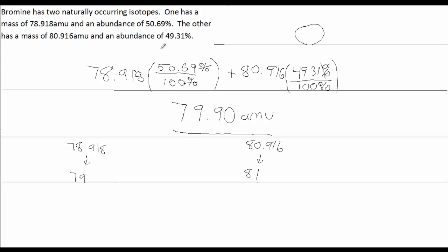Let's look at the percent abundances. This 78.918 has an abundance of, let's say, 51 percent. The 80.916 had an abundance of 49 percent. I'm just rounding off real quick here.